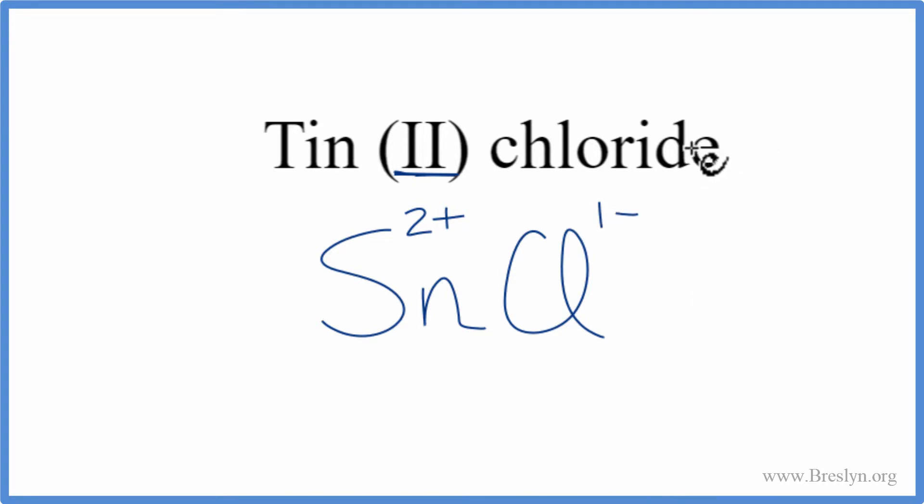Since Tin (II) chloride is a neutral compound, these need to add up to zero, to have a net charge of zero. And to do that, we can use the crisscross method. We move the one here, and the two here. We don't write the one, get rid of that, and then we can get rid of the charges, and that is the formula for Tin (II) chloride.